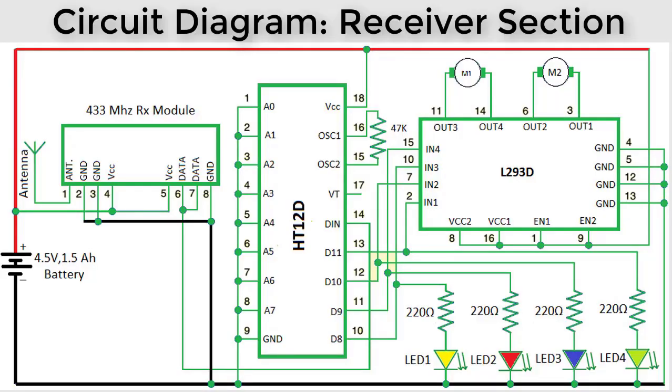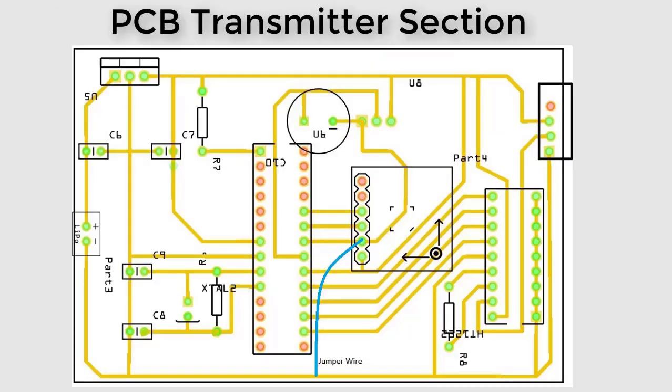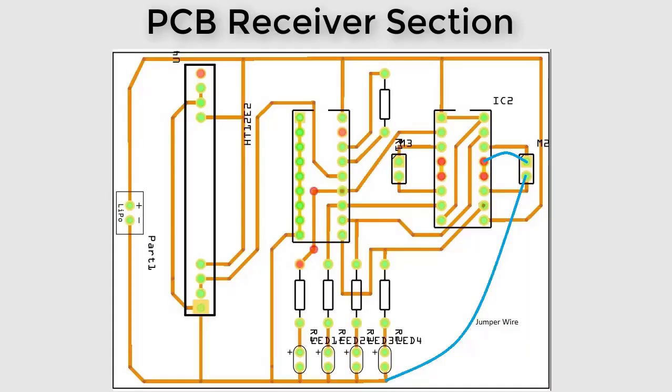This is the receiver section. We've used L293D motor driver IC for driving motors, HT12D for decoding, and 4 LEDs for indicating the status of direction. 433 MHz receiver module is for receiving the signal. This is the transmitter PCB - I've given the link in the description from where you can download and order.